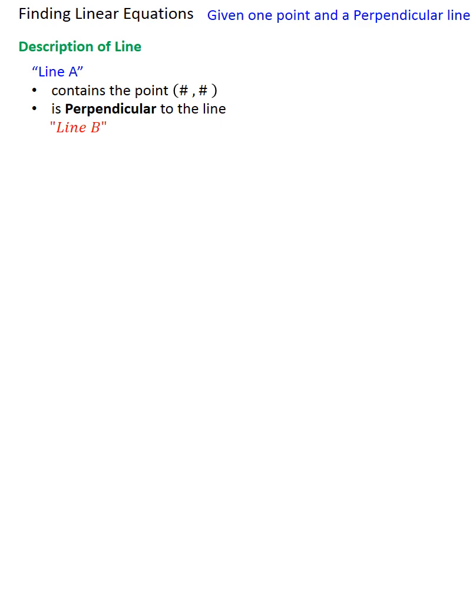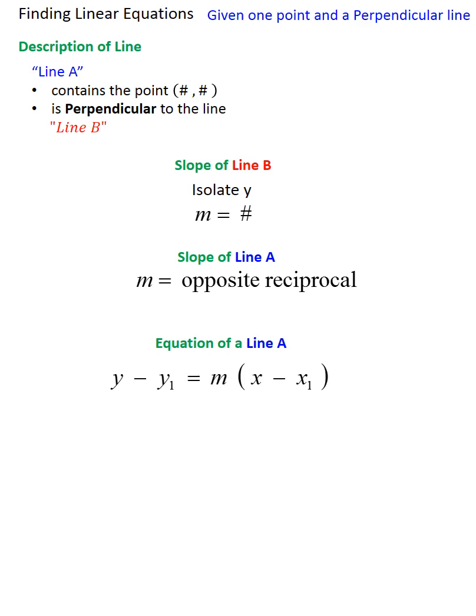First, you find the slope of line B by isolating y and finding the slope. And once you have the slope of line B, you know that line A has to have an opposite reciprocal slope. So, now you have the slope of line A. You can use the slope of line A to find the equation using point slope form.